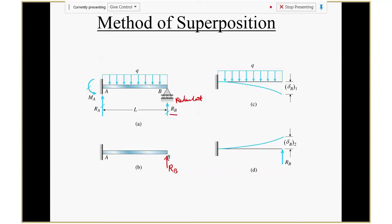So that's why you want to somehow reduce it to either a simple beam or a cantilever beam — that's the best choice. So in this case, let's say we remove the RB as redundant. If you remove RB as redundant, then this beam becomes like you have a distributed load here and then you also have an RB here — you have two loads. So therefore, for this beam, it's a cantilever beam with two loads: the distributed load and the RB. So we find the solution through the superposition.